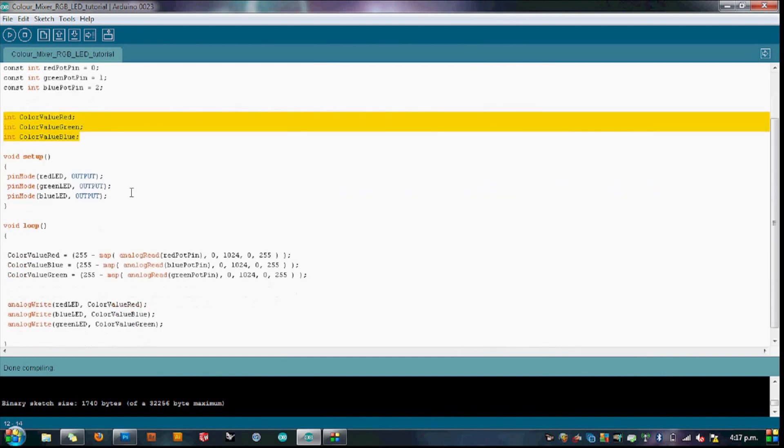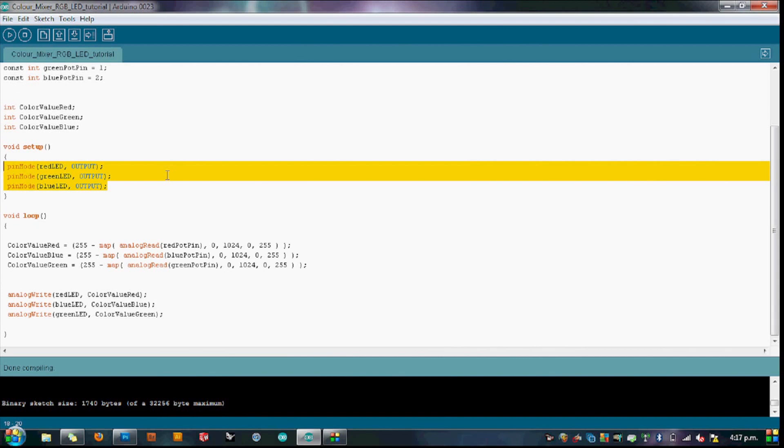With that done we now go ahead and tell the Arduino that each pin on the LED is an output, which it will then later assign and write a value to. The setup will only run once to the Arduino board.